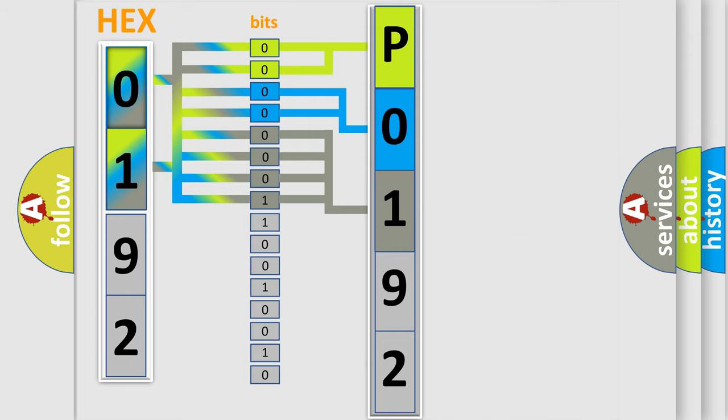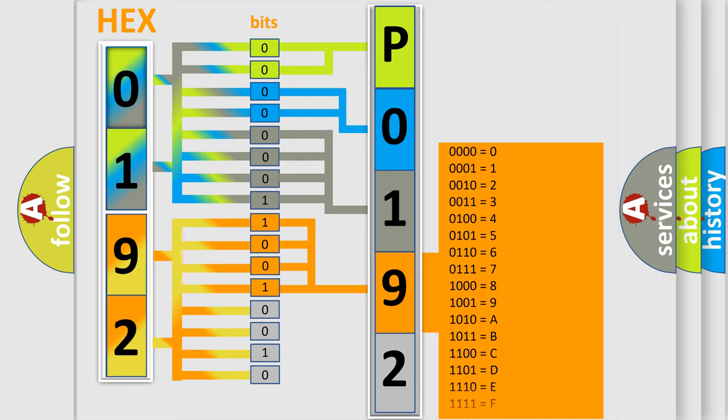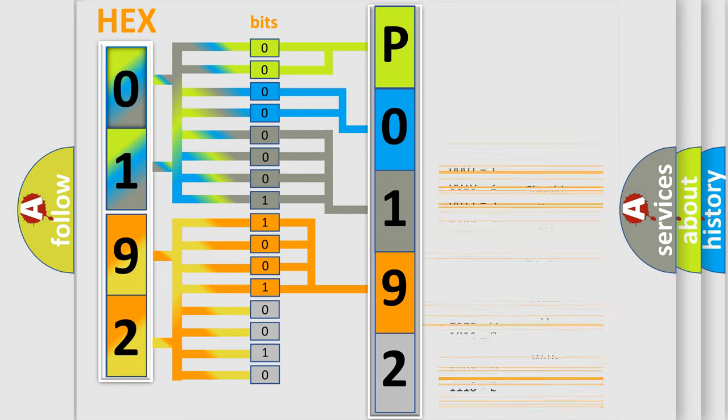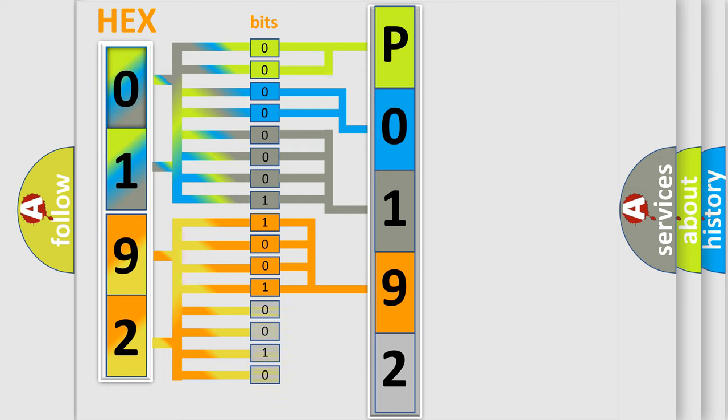And the combination of the last four bits defines the fifth character. A single byte conceals 256 possible combinations.